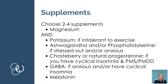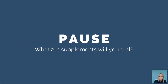Consider potassium if you're intolerant to exercise, have restless legs, or heart palpitations. Ashwagandha and phosphatidylserine are really good for anyone stressed or anxious — they help lower the hyper-arousal system. Chaseberry or natural progesterone can be used for hormonal imbalances leading to cyclical insomnia, PMS, or PMDD. GABA is helpful for anxiety and cyclical insomnia due to hormonal imbalances. And the last option is melatonin. Write down your two to four supplements in your workbook right now.